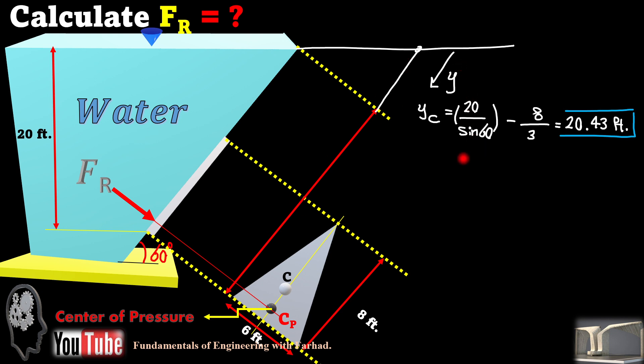That's 20 over sine of 60 degrees and then minus 8 over 3, which is one third of our triangular gate. And that gives us 20.43 feet in terms of y component of centroid here.